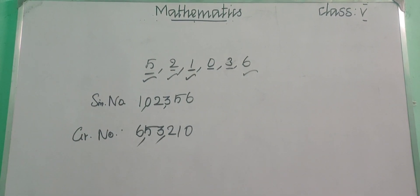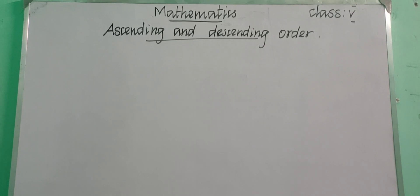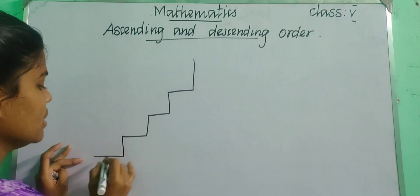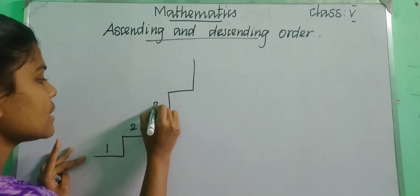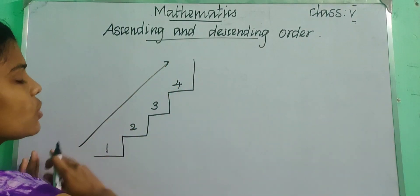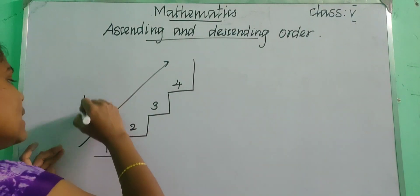Now let us see about the next topic — ascending and descending order. Ascending order means simply if you are stepping on a staircase, you start from the first step, second step, third step, fourth step — if you go in an order from bottom to top, that is called ascending order. Ascending — 'A' means small, so ascending order means small to big.